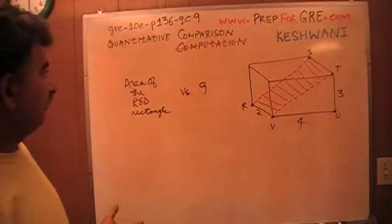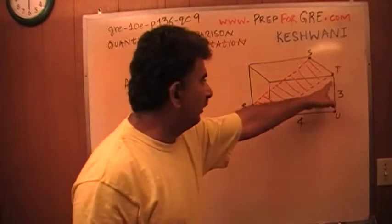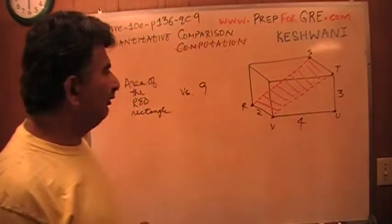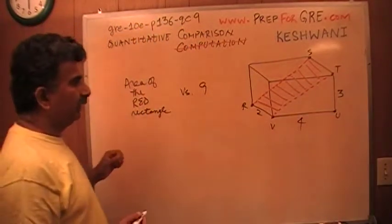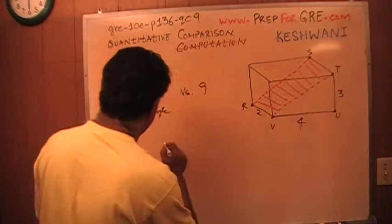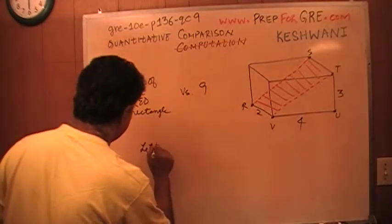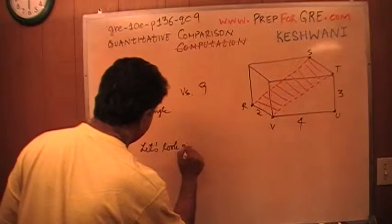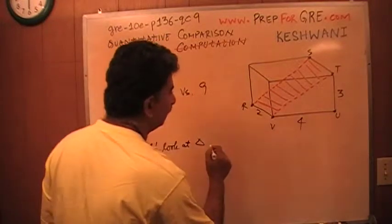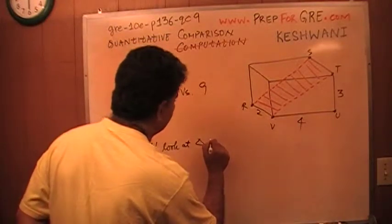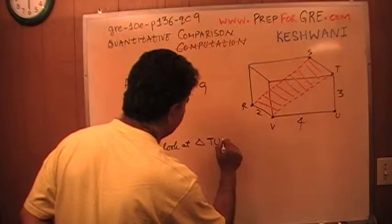Well, the area of the rectangle that we have to figure out is very simple. This is 2. All I have to figure out is this side, V to T. How do I figure out V to T? Well, let's look at triangle T, U, and V.